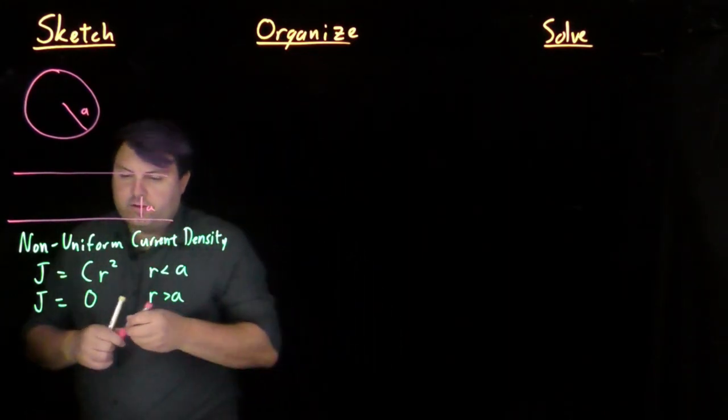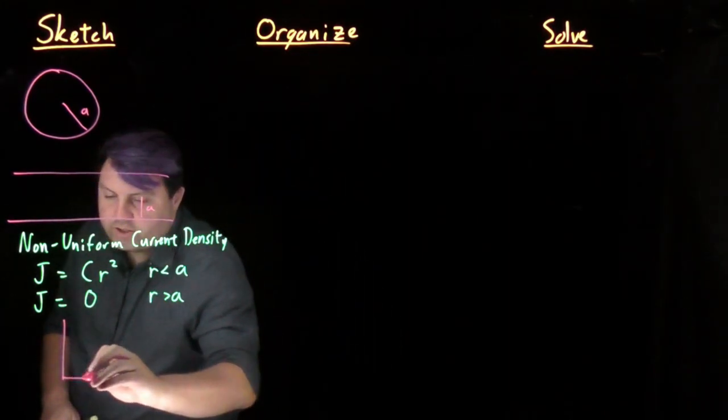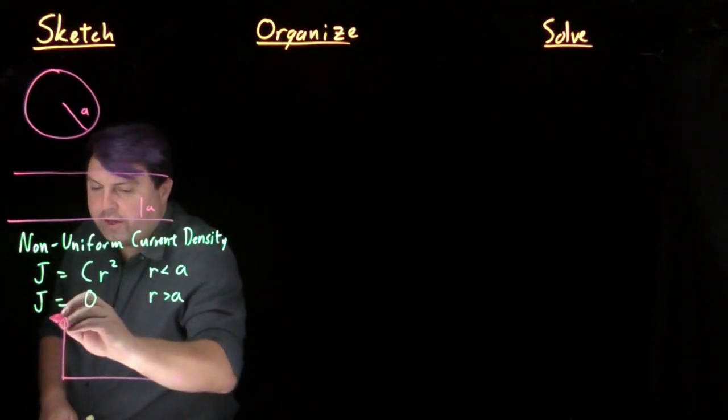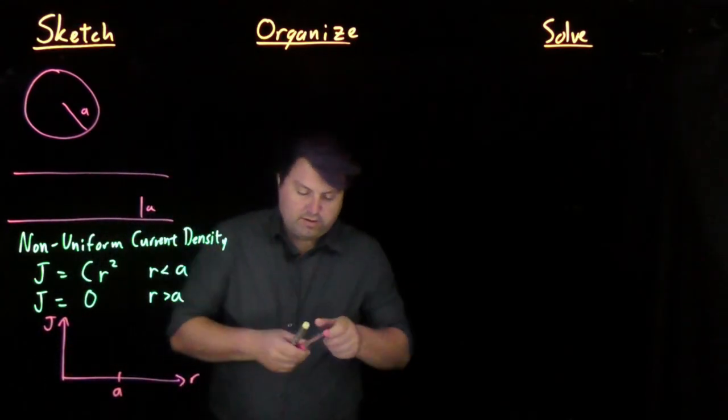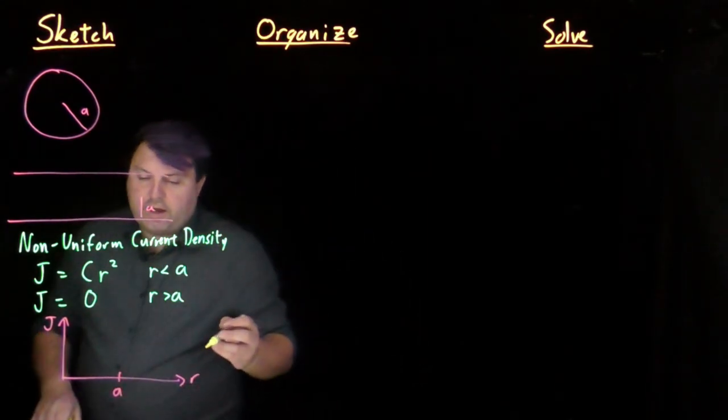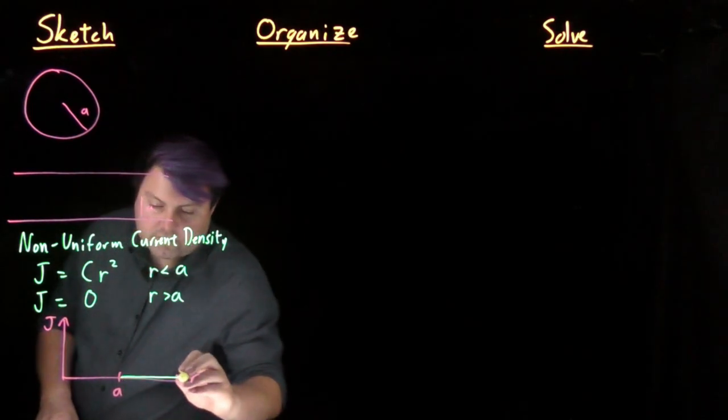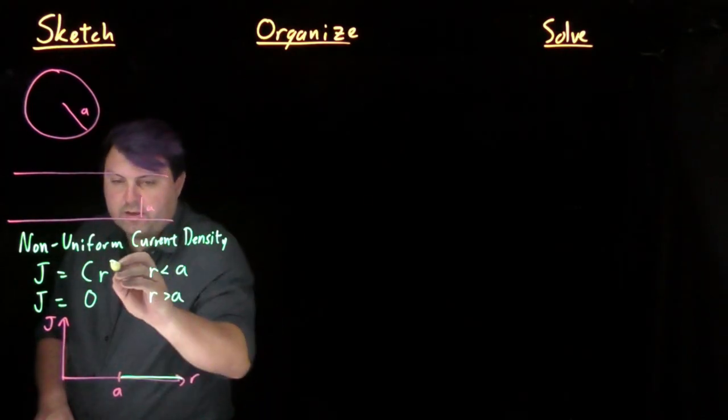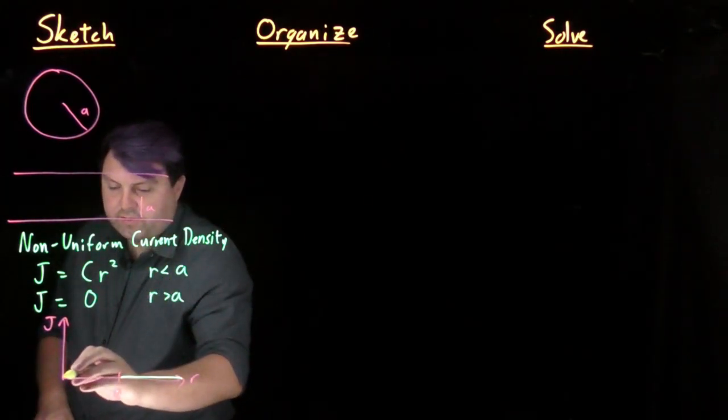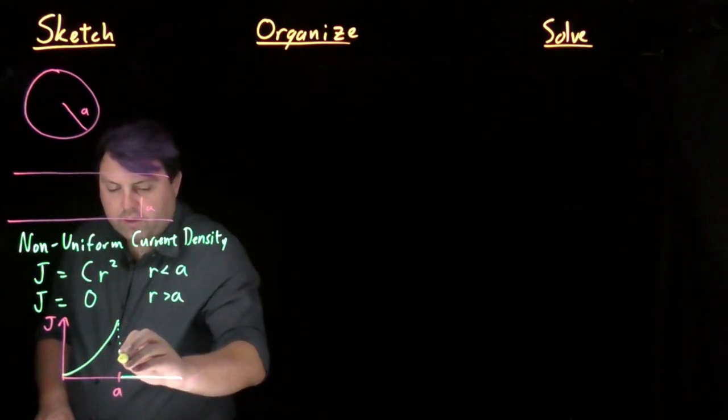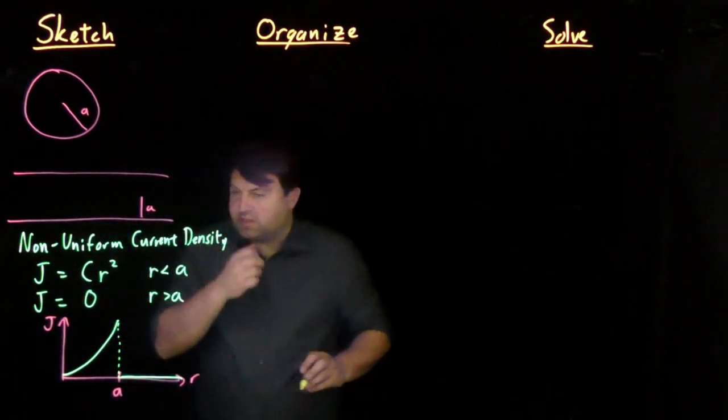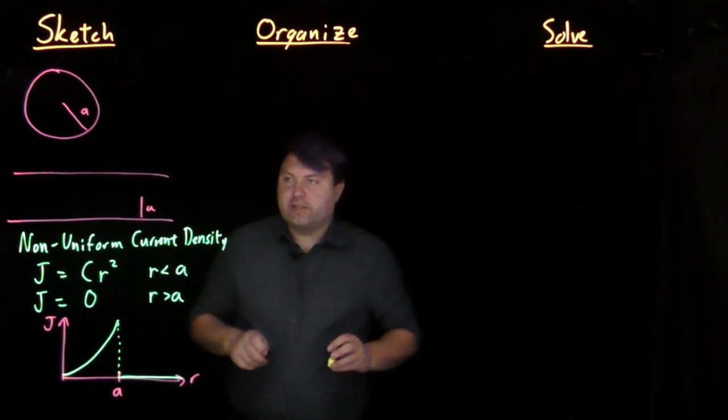So if we want to show this, we can look at our current density versus radius. After our radius a, our current density goes to zero, but before then it starts at zero because we can start at radius zero, and then it goes up parabolically until it discontinuously jumps down like this.